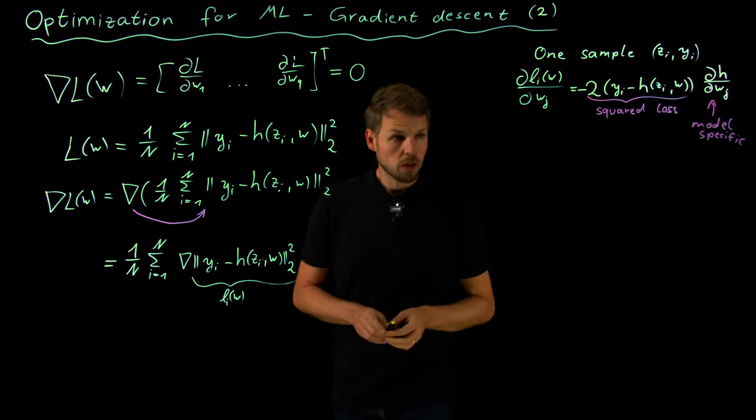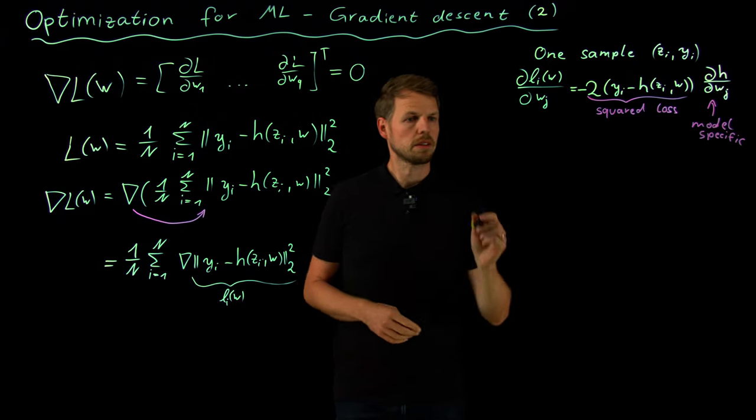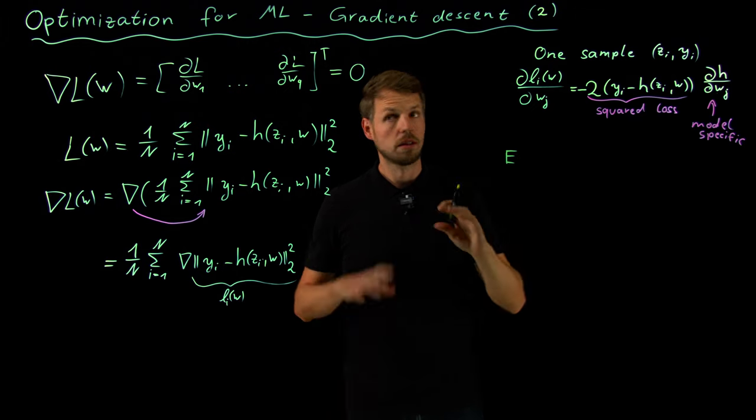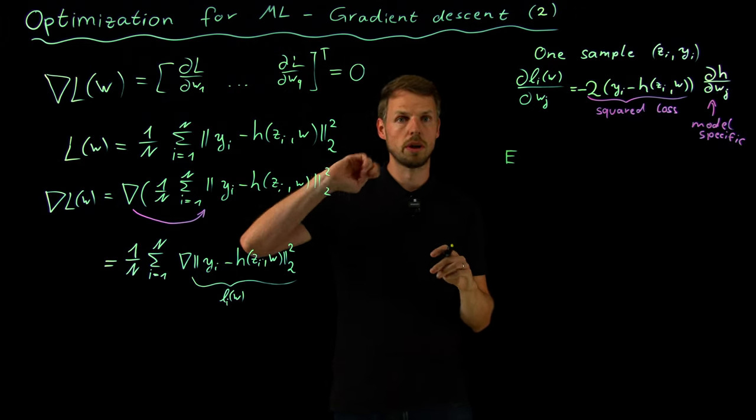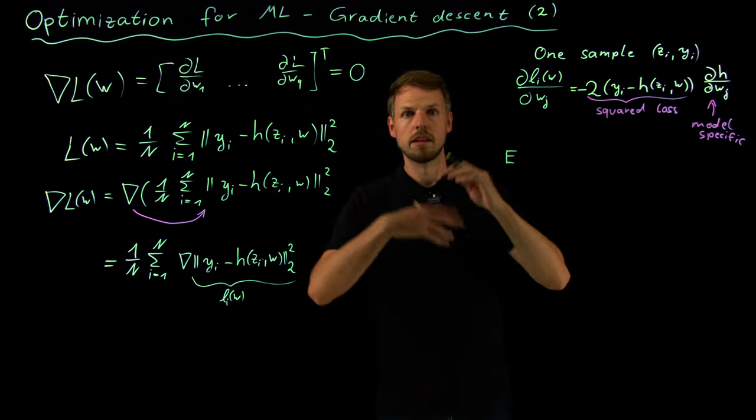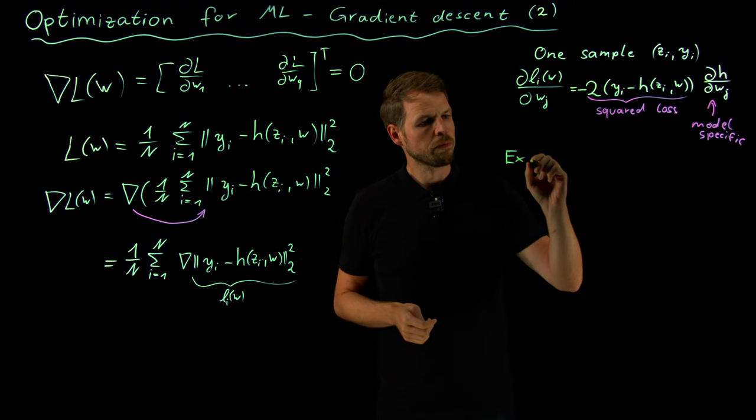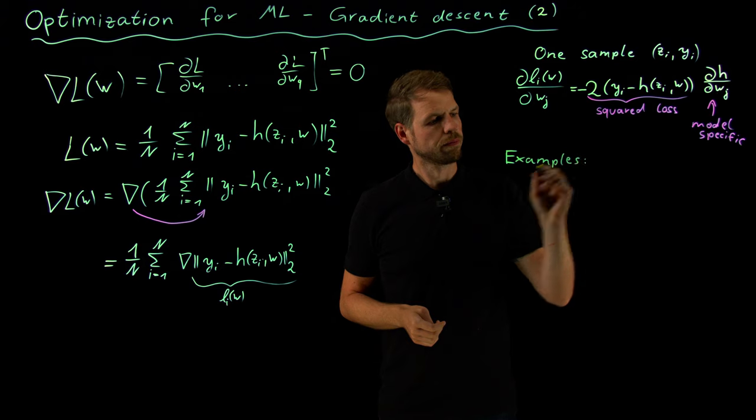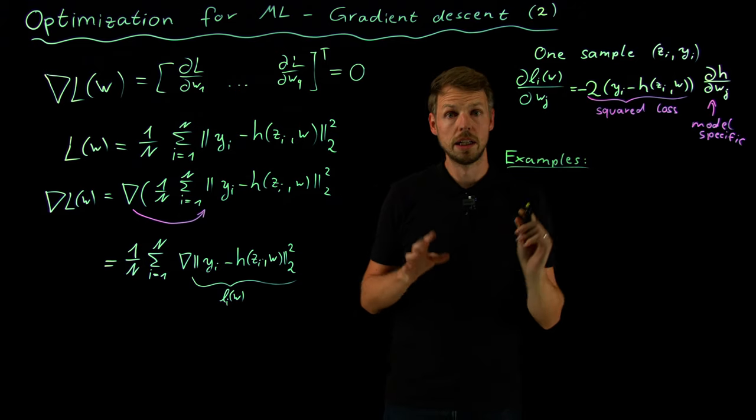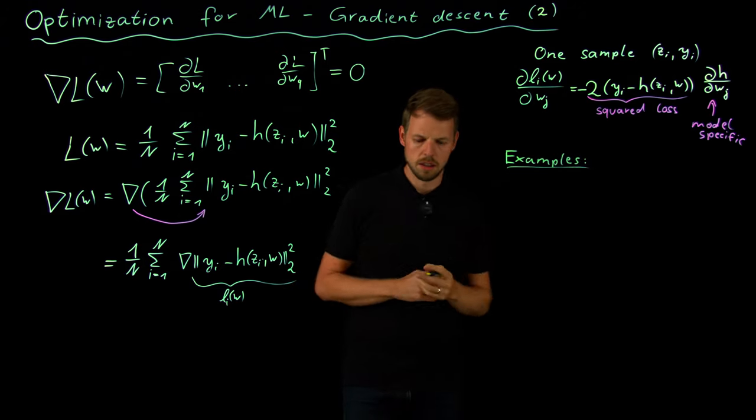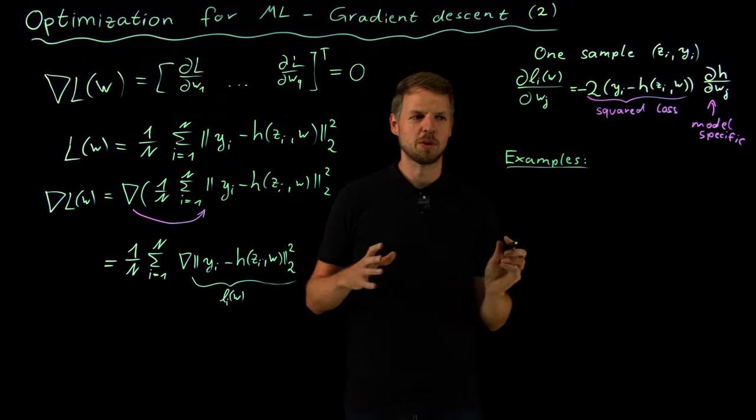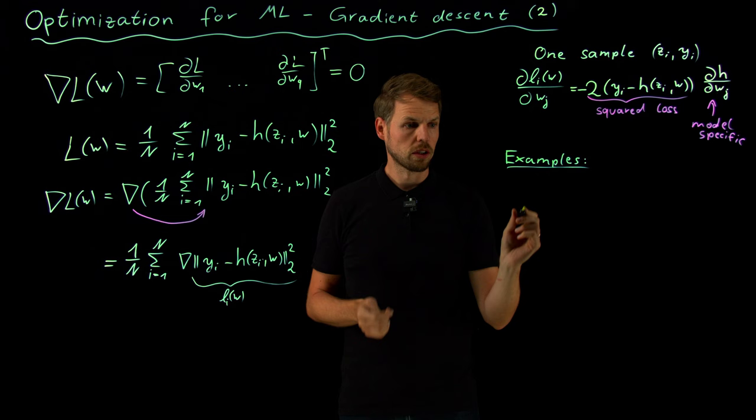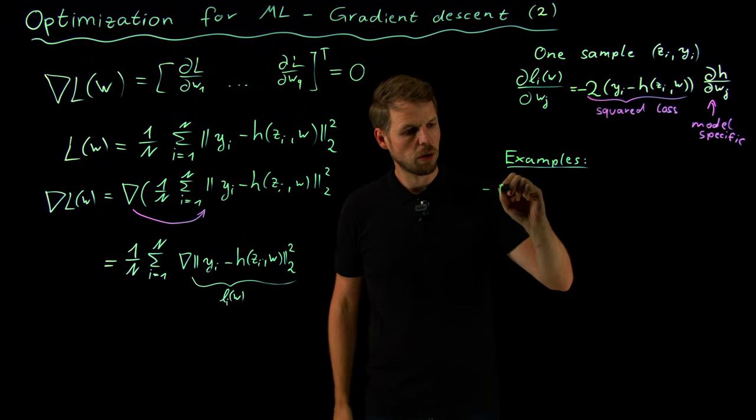All right, so let's look at two examples before we move on to the next question of how to actually use this gradient for getting updates and improving our model. The examples we are considering are first of all a linear model, which is kind of boring because we already have a closed form solution, but this is something we know, so we can compare against this.